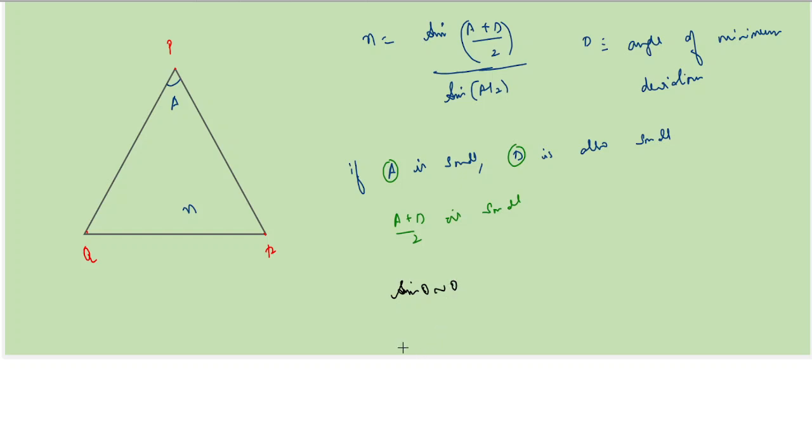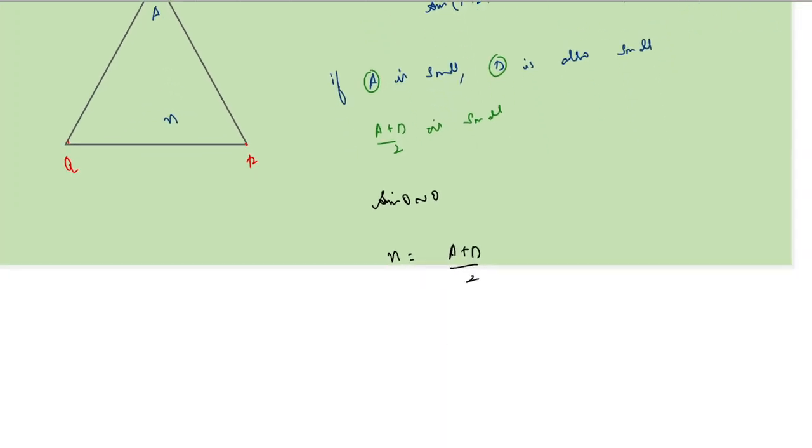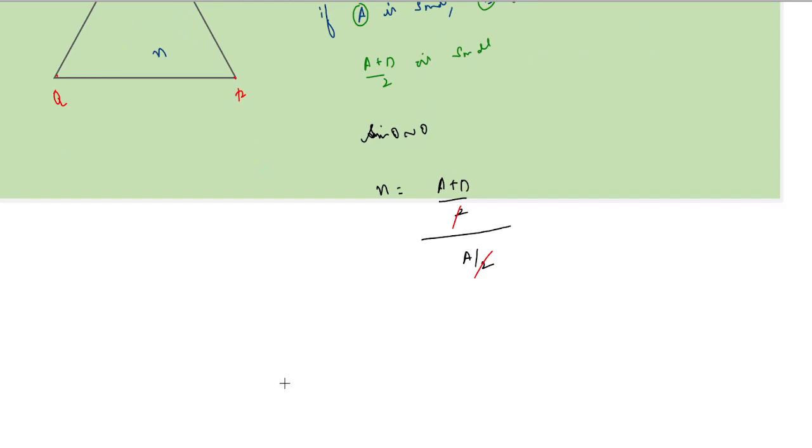Therefore, this n becomes n equals sine of (A plus D) by 2. Since A and D are small, this just becomes (A plus D) by 2, divided by A by 2. From this, the 2 gets cancelled and what remains would be...